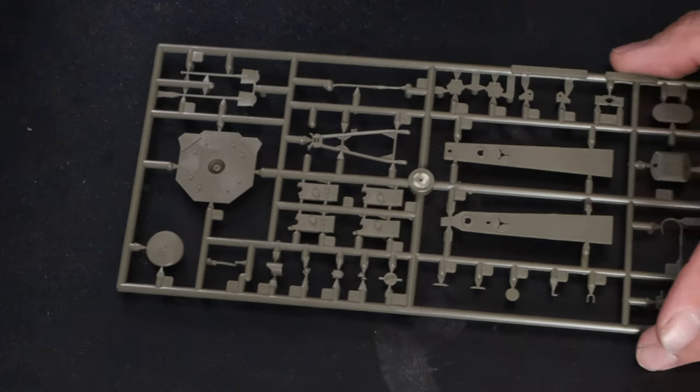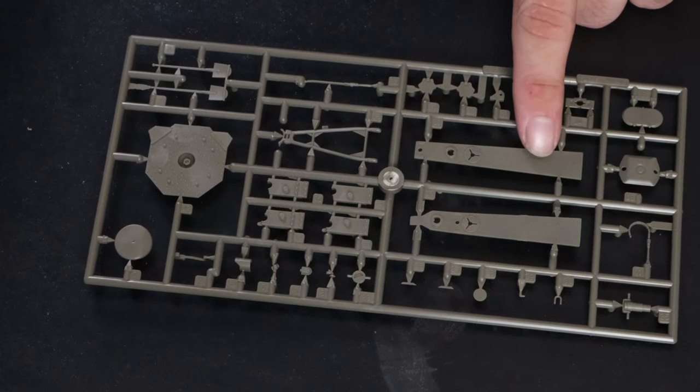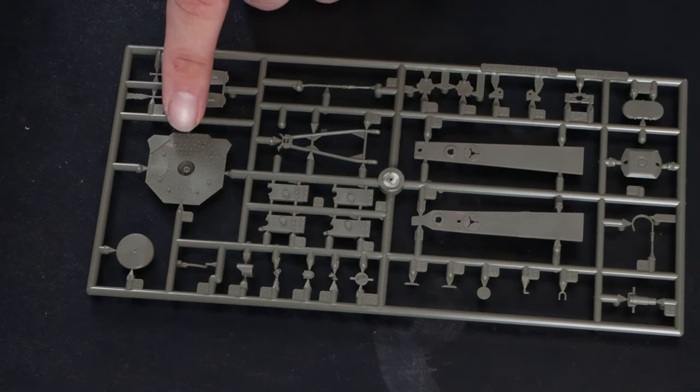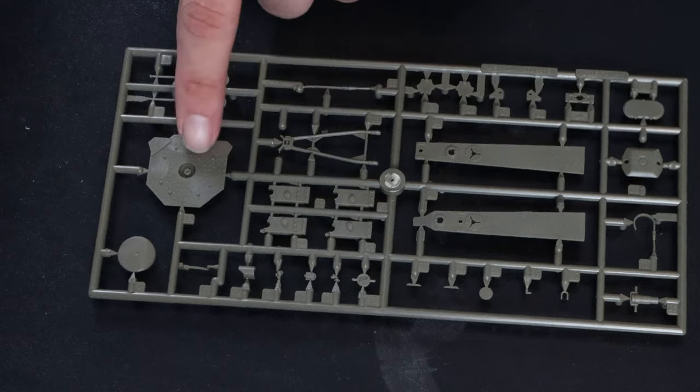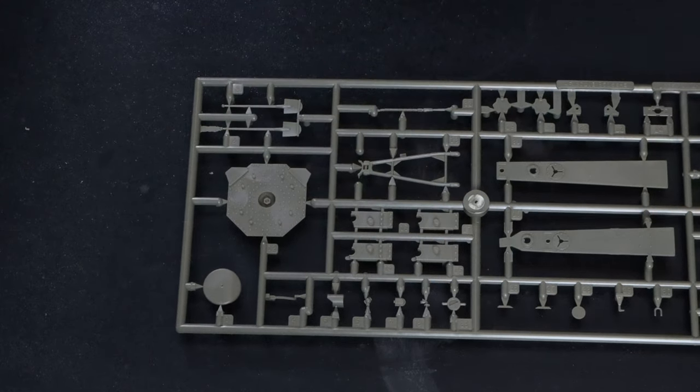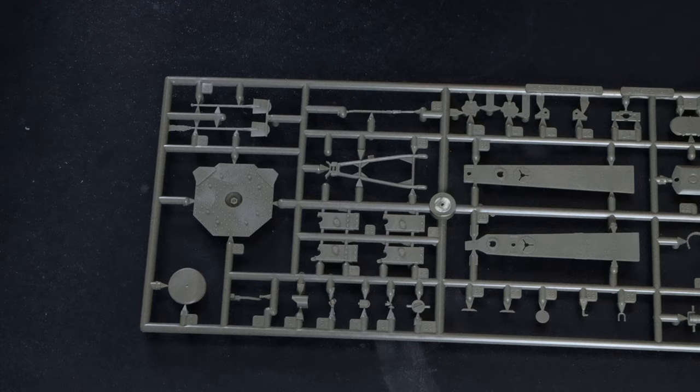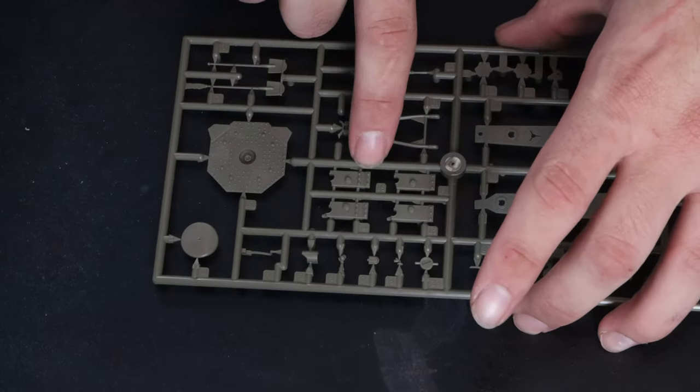And finally, the last sprue is more of the frame of it. So I think these are the undersides of the actual main body of it, and that I believe is the bottom of the pivot point of it, a few more tools and stuff like that. I think the gun actually sits on those.